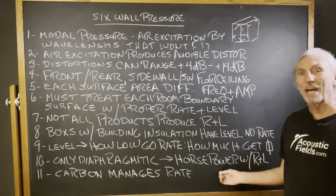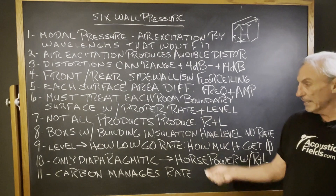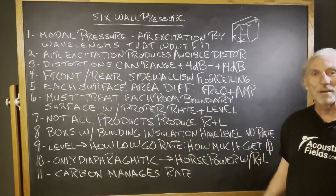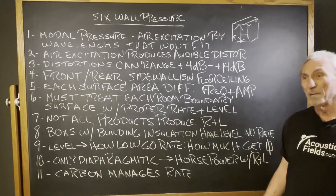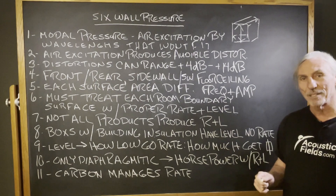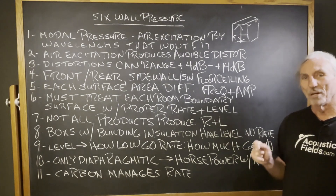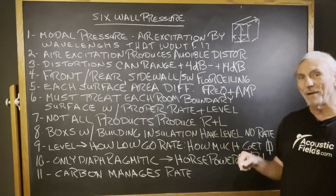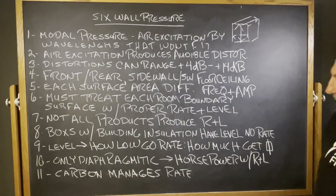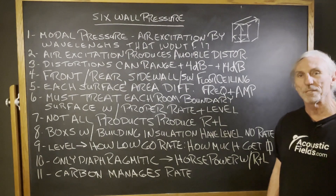So what do we use to do that? Diaphragmatic absorption. Of the three types — Helmholtz, membrane, and diaphragmatic — diaphragmatic has the most horsepower. Boxes built with building insulation don't have that kind of horsepower. They may go down to 40 Hz, but they don't get enough to make a big difference in the attack and decay rates. That's the goal of any low-frequency absorption: to have an impact on the response time of the room.